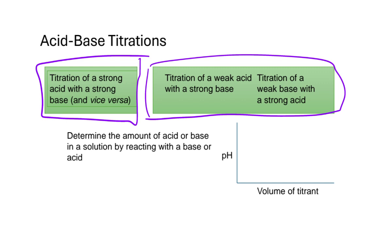These are still calculations you're most likely familiar with if you're in a general chemistry course. Often we use titrations to determine an amount of acid or base in solution by reacting with the opposite. Sometimes we'll plot our data with pH on the y-axis and volume of titrant on the x-axis, and we might get a plot that looks something like that.